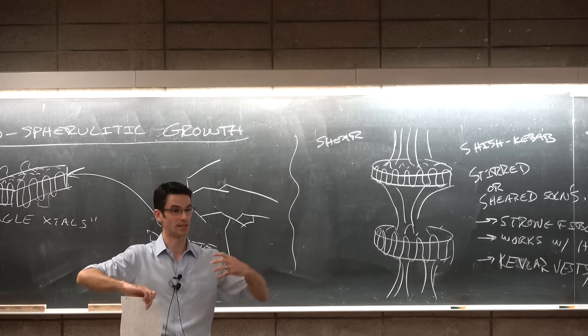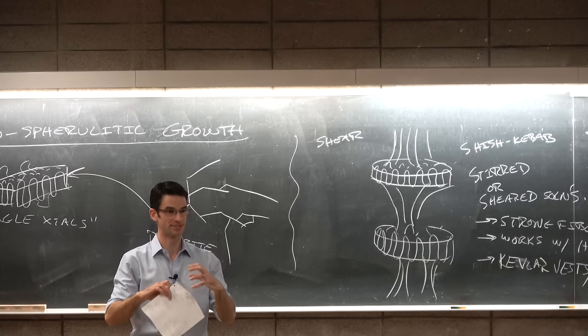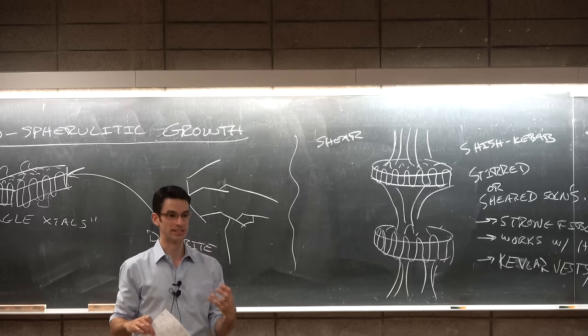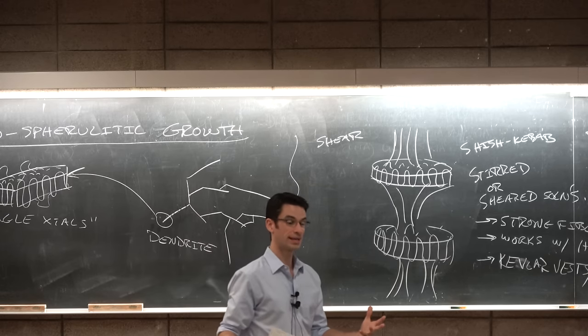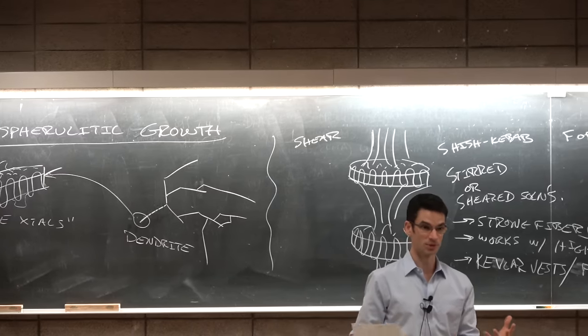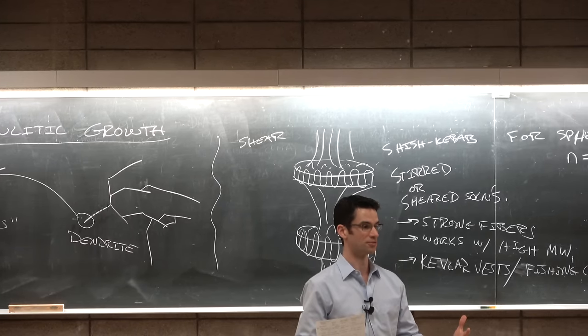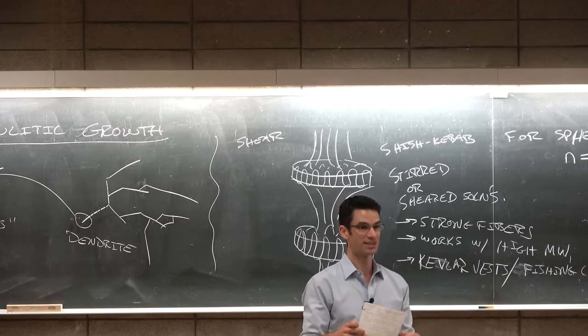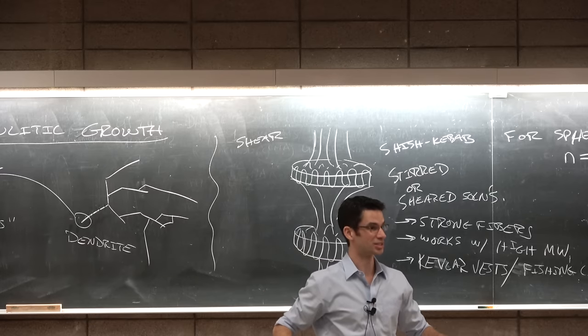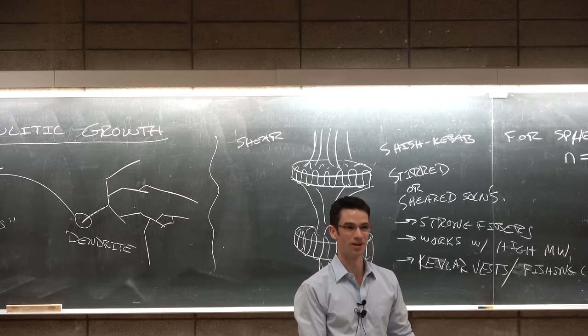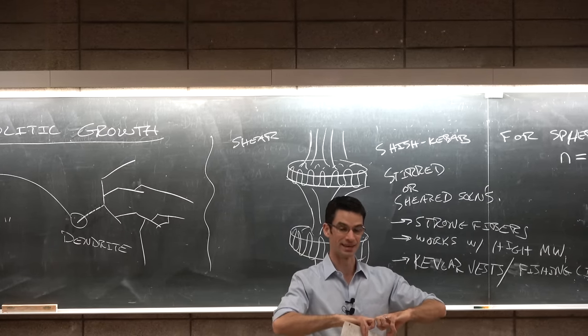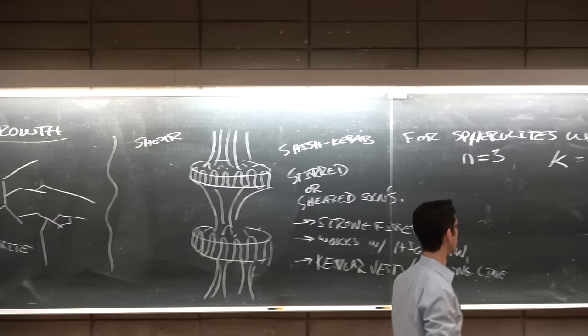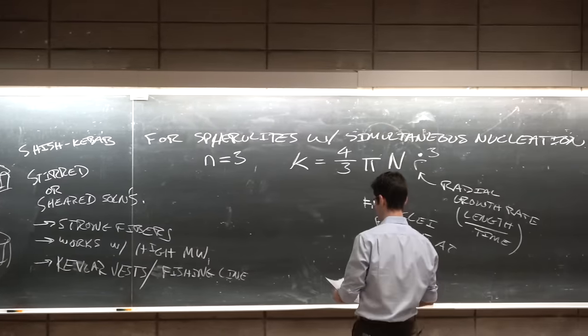Because if you align all the polymer chains, you have all of these strong C-C bonds oriented along the axis of strain. And that gives the material a lot of strength. Whereas just a solid polymer that's made of a spherulitic structure, which is overall anisotropic, there's no preferred axis of all these strong bonds. But they're all kind of pointed in useless directions. If you align them all, you can get all of the strength of the covalent bonds along the same axis.